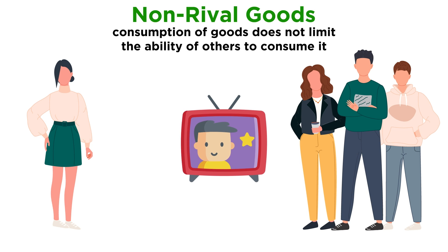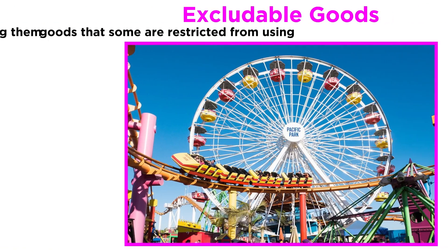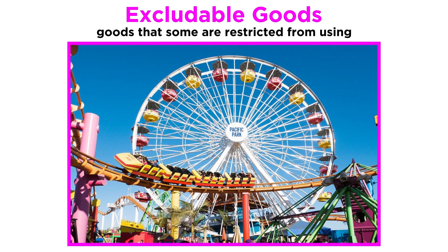Watching movies on Netflix does not deplete the amount of movies available on Netflix to watch. Non-excludable goods are those which can't exclude any individuals or groups from using them — think of public roads, which absolutely anyone can drive on. Excludable goods, on the other hand, are those that some are restricted from using, often due to affordability, like an expensive theme park.